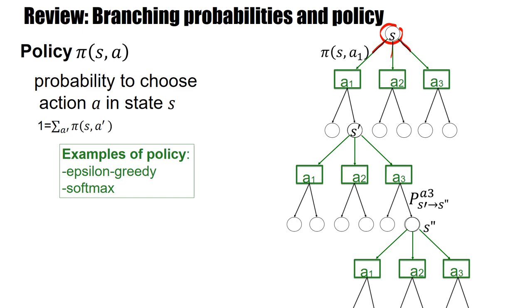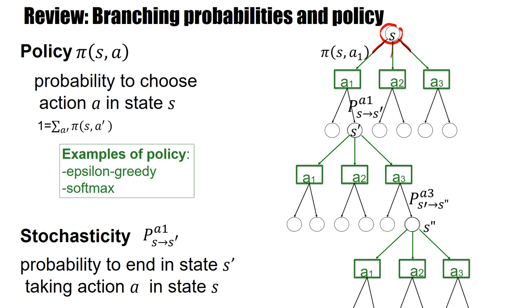And then for a given fixed policy we have another branching ratio that corresponds to the fact that even if I have taken action A1 in state S there are still several possibilities I could end up in different continuing states S prime. And this is described by the stochasticity of the environment, this branching ratio P A1 S to S prime.